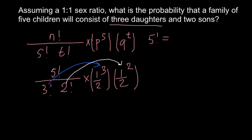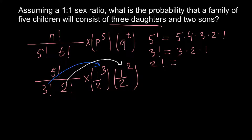If you don't know how to expand factorials, here is an explanation. 5 factorial equals 5 multiplied by 4 by 3 by 2 by 1. 3 factorial equals 3 multiplied by 2 by 1. And 2 factorial equals 2 multiplied by 1. As you can see, this is just a simple descending sequence of numbers.